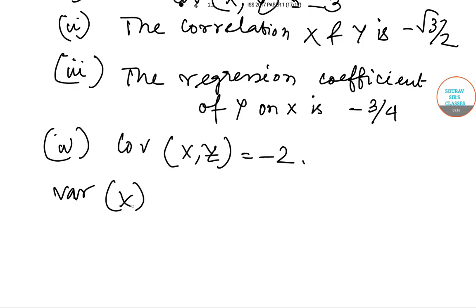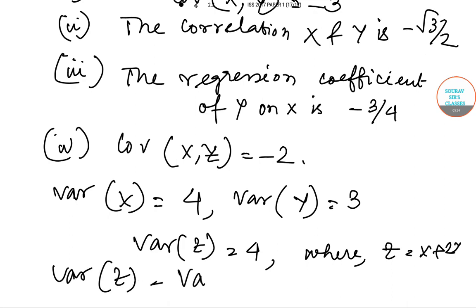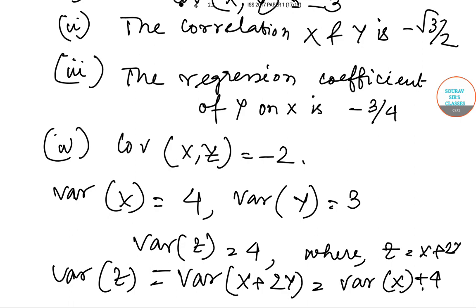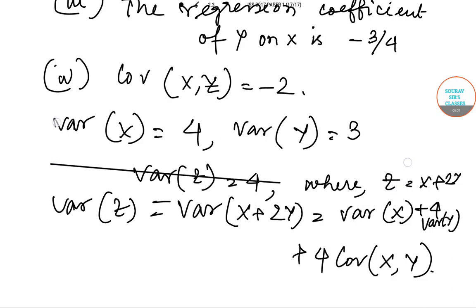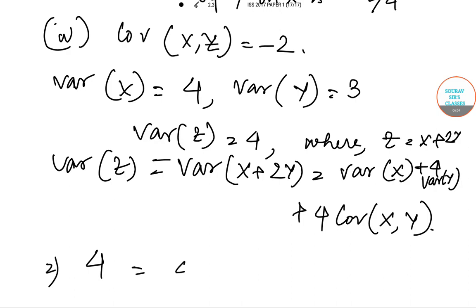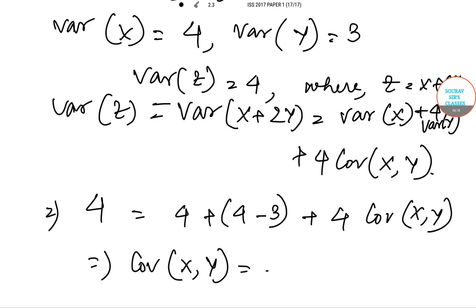Variance of x as given is 4, variance of y is 3, variance of z is 4 where z equals x plus 2y. Variance of z equals variance of x plus 2y equals variance of x plus 4 variance of y plus 4 covariance of x and y. So 4 equals 4 plus 4 times 3 plus 4 covariance of x and y, which reduces to covariance of x and y equals minus 3.